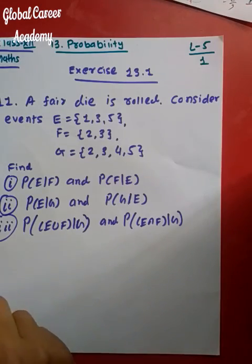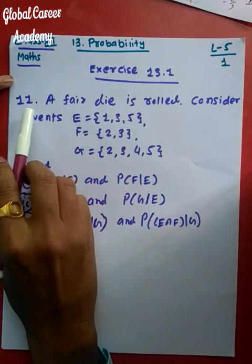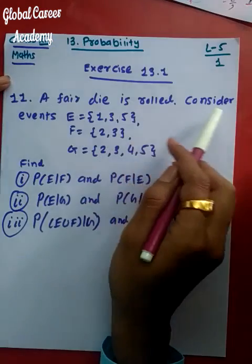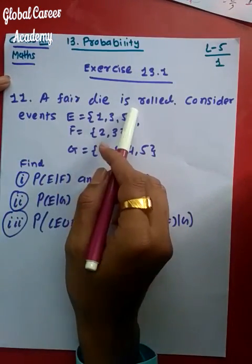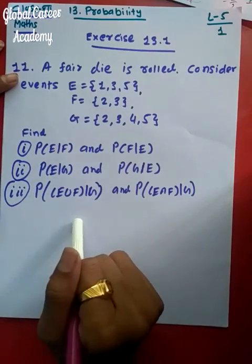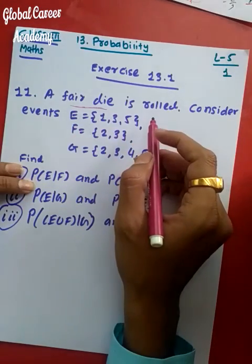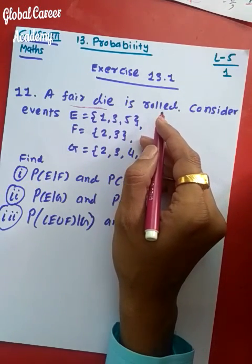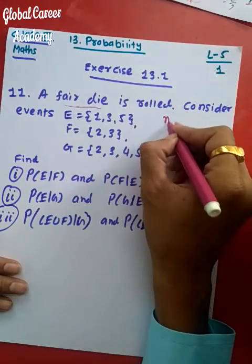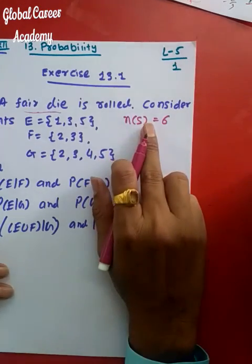Hello everyone. Let us start Lecture 5, Exercise 13.1. Today we are going to do Problem number 11. A fair die is rolled, and certain events are given — we have to find out various probabilities. Since a fair die is rolled, it has six possible outcomes, so the number of sample points is six.